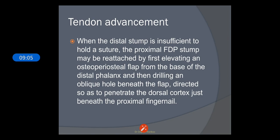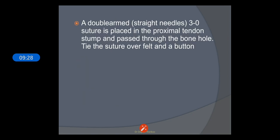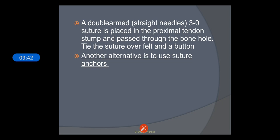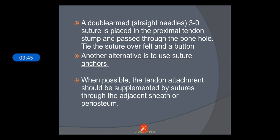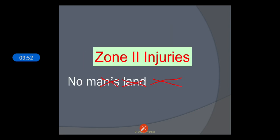In tendon advancement, when the distal stump is insufficient to hold a suture, the proximal FDP stump may be reattached by first elevating an osteoperiosteal flap from the base of the distal phalanx and drilling an oblique hole beneath the flap, directed to penetrate the dorsal cortex just beneath the proximal fingernail. A double-arm 3-0 suture is placed in the proximal tendon stump and passed through the bone hole, then tied over a felt button. Another alternative is to use suture anchors. When possible, the tendon attachment should be supplemented by sutures through the adjacent sheath or periosteum.